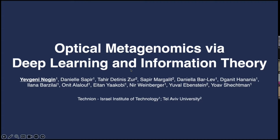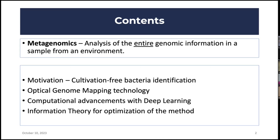First, let's define metagenomics, which is the analysis of the entire genomic information in a sample from an environment. That is in contrast to traditional genomics, which takes and amplifies a specific section of genome for specific organisms. The motivation for this research personally was cultivation-free bacteria identification, though there are many other uses of the technology and of metagenomics in general.